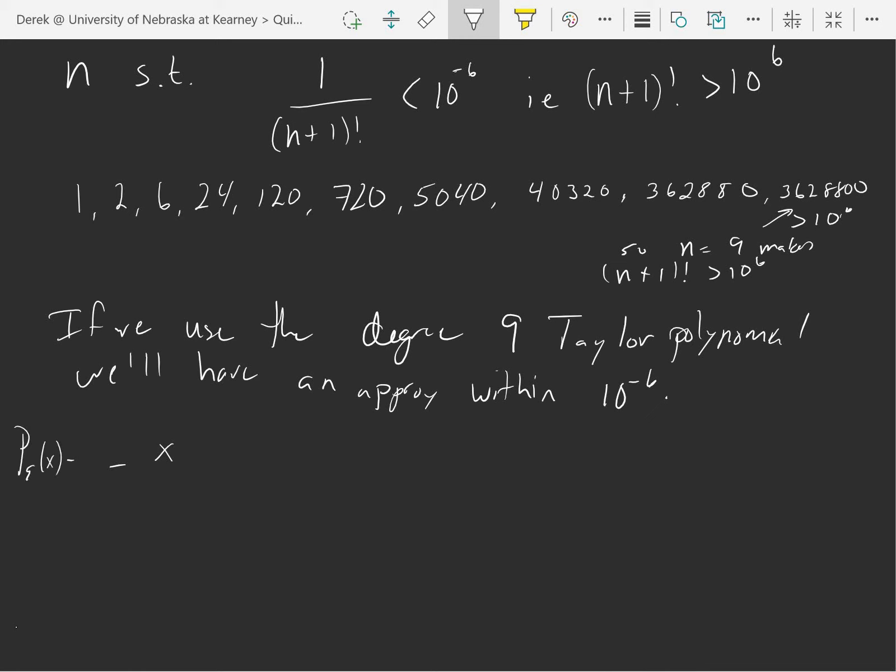So we'll use, P9(x) is equal to x minus x cubed over 6 plus x to the 5th over 120 minus x to the 7th over 5040.